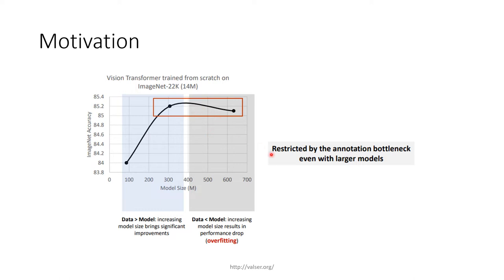This is due to overfitting. Hence, we can say that visual transformers are restricted by the annotation bottleneck even with larger models.